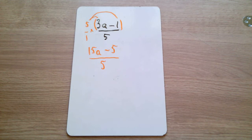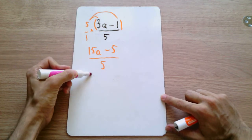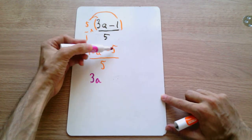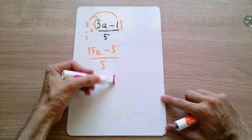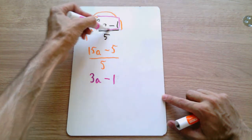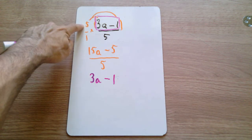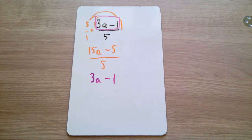Once we've done this, we can simplify this expression by dividing top and bottom by 5. On the left-hand side, 15a divided by 5 is simply 3a, and minus 5 divided by 5 is negative 1. We've got exactly what we started with, without the denominator. So when you multiply through by a denominator, you can actually cancel out the 5 you're multiplying with and the denominator underneath.